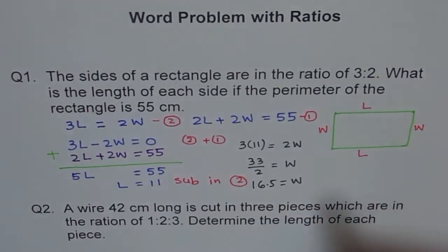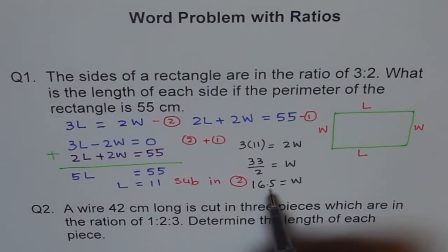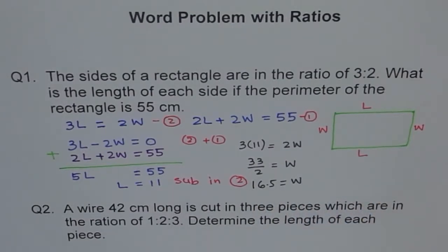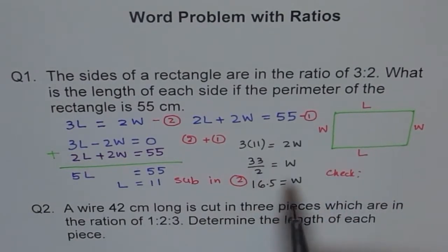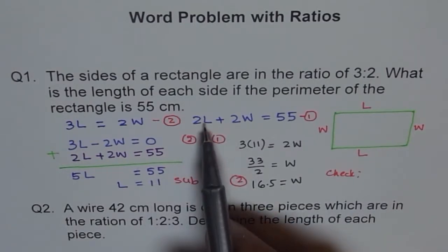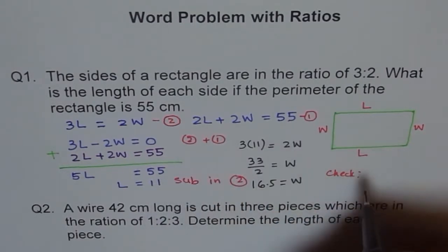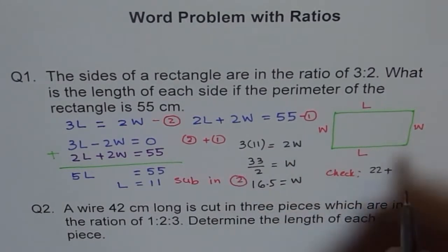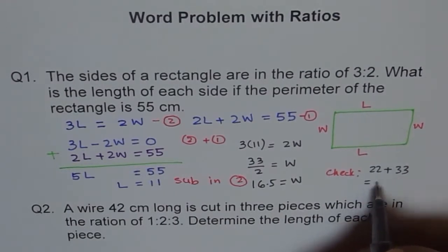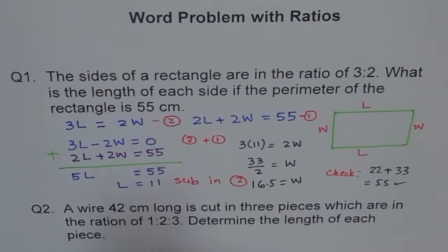Either way it works. So the length is 16.5. Now you can check the answer. If width is 16.5, how will you check the answer? We can check the answer by substituting length and width in the second equation. So 2 times length is 22, so we get 22 plus 2 times width was 33, so we add 33 here and we get 55. So the numbers are correct.